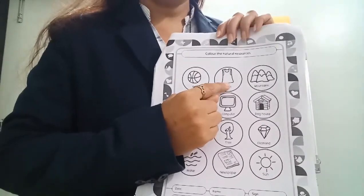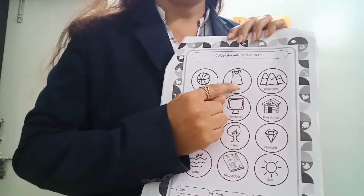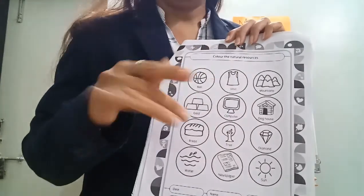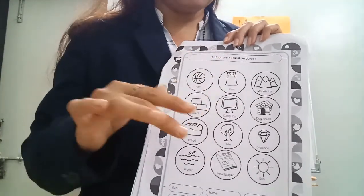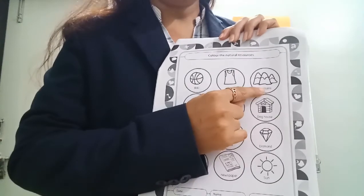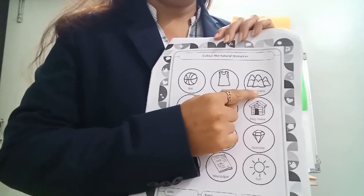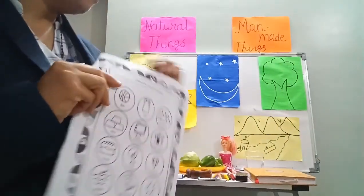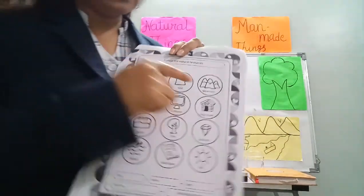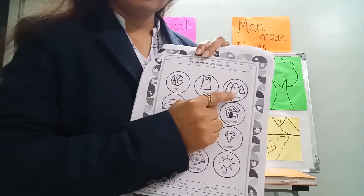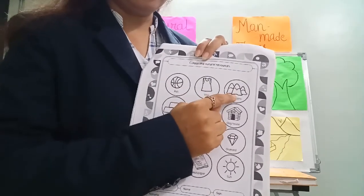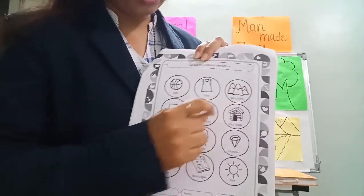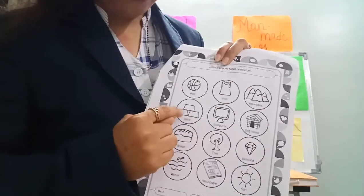Next, waste. Waste is also a man-made thing. Now you have to color the mountains. This is the mountains — I have explained you the mountains. So it's a natural thing, so you have to color the mountains.